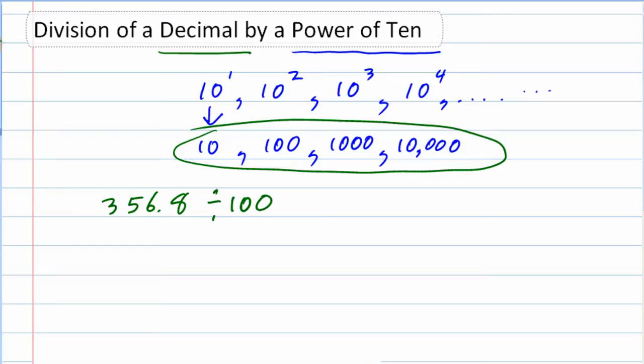We're going to move the decimal a set number of times, and we're going to move it depending on how many zeros are in the number that we're dividing by, whether there's 1, 2, 3, 4, etc. That tells us how many times to move it.